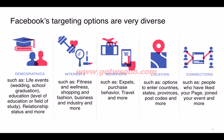Facebook targeting options are very diverse. For demographics, you can target based on life events like marriage, school graduation, education level, and relationship status. For interests, Facebook monitors all user activity and categorizes users into buckets — fitness, wellness, shopping, fashion, business, and more. For behaviors, you can target travelers, expats, or people by purchase behavior. For location, you can target countries, states, cities, or specific areas within a city. For connections, you can target people who have liked your page, not liked it, or joined your event.